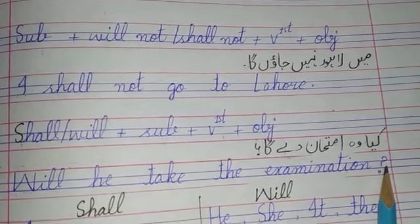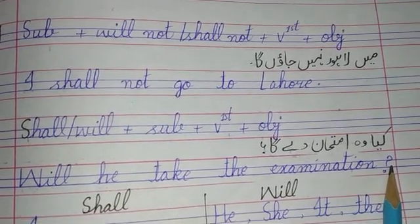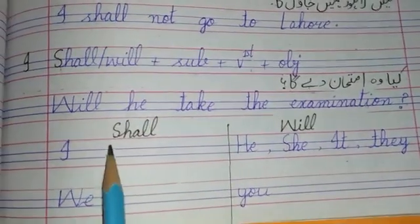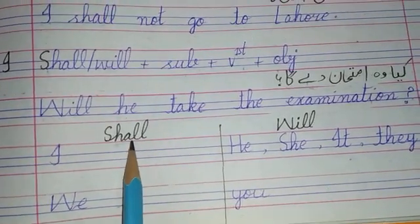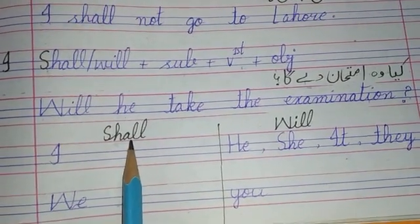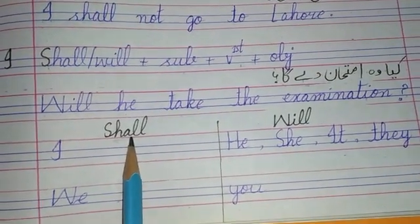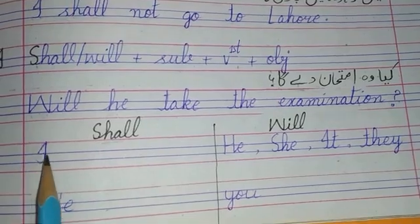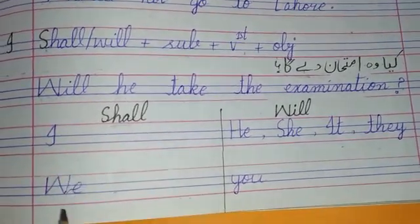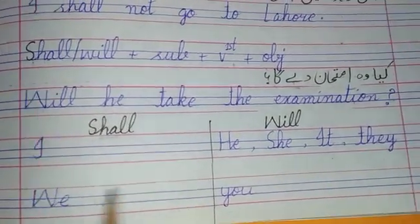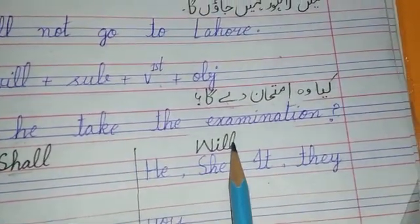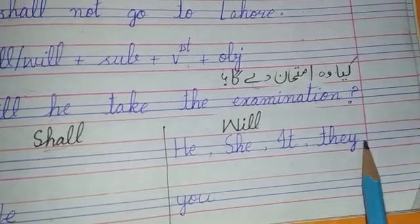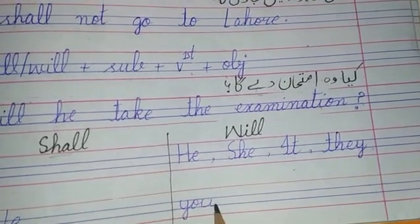At the end we put a question mark. We will use 'shall' with 'I' and 'we.' And 'will' is used with 'he,' 'she,' 'it,' 'they,' and 'you.'